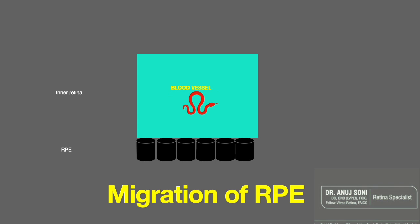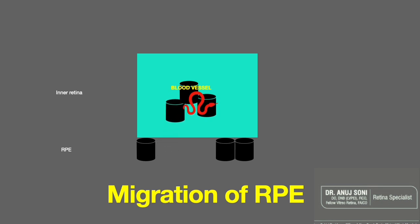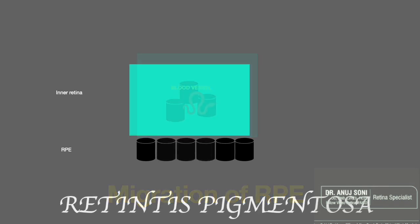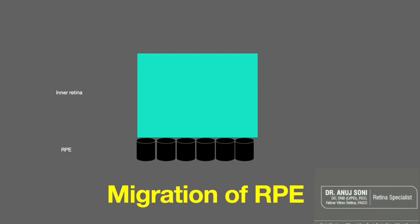With the loss of photoreceptors, there is also loss of choriocapillaris. We may speculate that RPE migration and bony spicule formation is an attempt to form a blood-retina barrier, similar to the RPE-choriocapillaris complex.